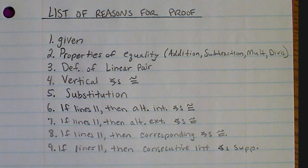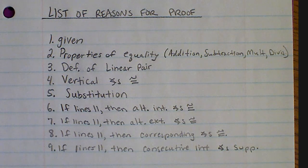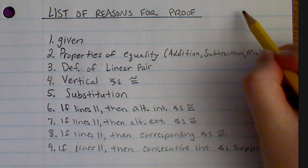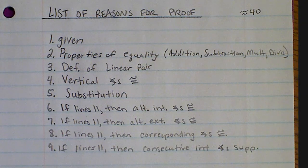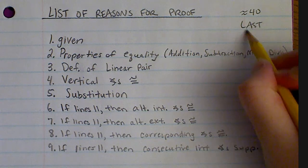To summarize this video, I want you to start a 'list of reasons' sheet. Flip to the very back of your notebook and start on a fresh page, because we're going to add to this list throughout the unit. We'll have about 40 reasons total, so you'll need a fresh sheet you can access quickly — just make it the last page in your notebook.